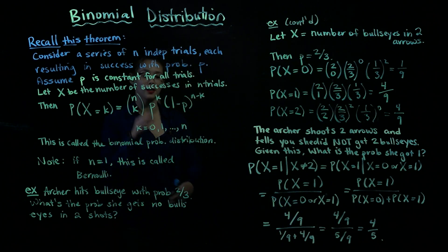So for this particular archer, if she shoots two, tells you she did not get two bullseyes, then the probability that she got one bullseye is four fifths.